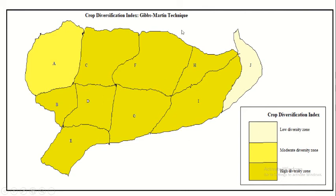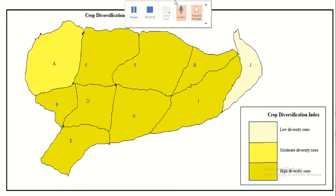This is how we can calculate crop diversification results as suggested by Gibbs and Martin.